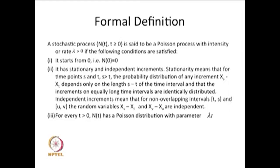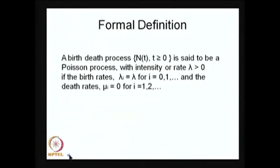Another way of defining the Poisson process is to start with the birth-death process. The birth-death process is a special case of a continuous-time Markov chain, which is itself a special case of a Markov process. So the hierarchy is: stochastic process → Markov process → continuous-time Markov chain → birth-death process → Poisson process.